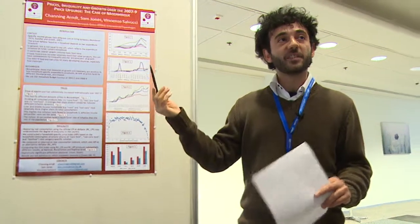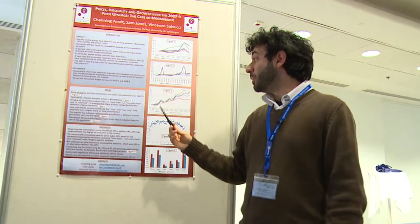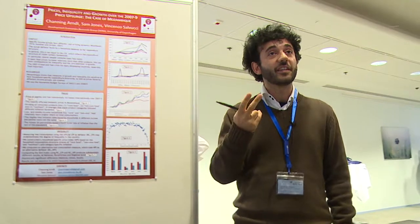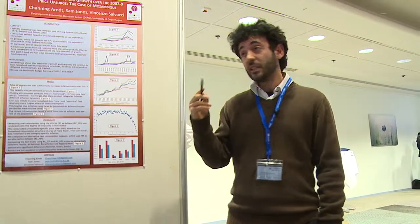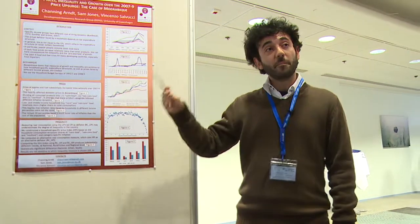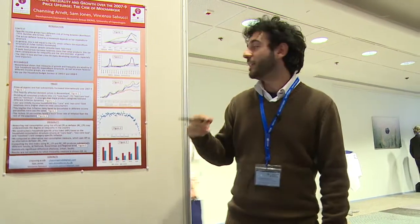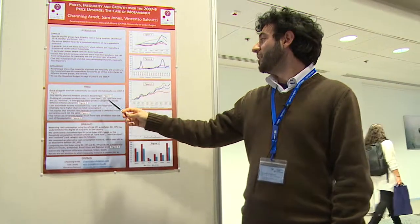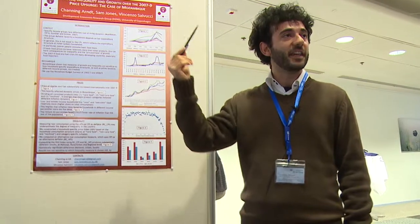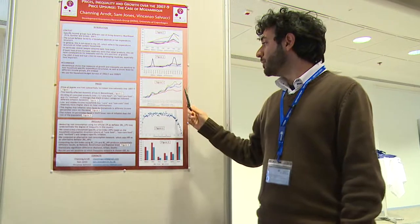We divided all consumed products into three categories: non-food, core food — which is the most important food accounting for around 75% of consumption — and non-core food.